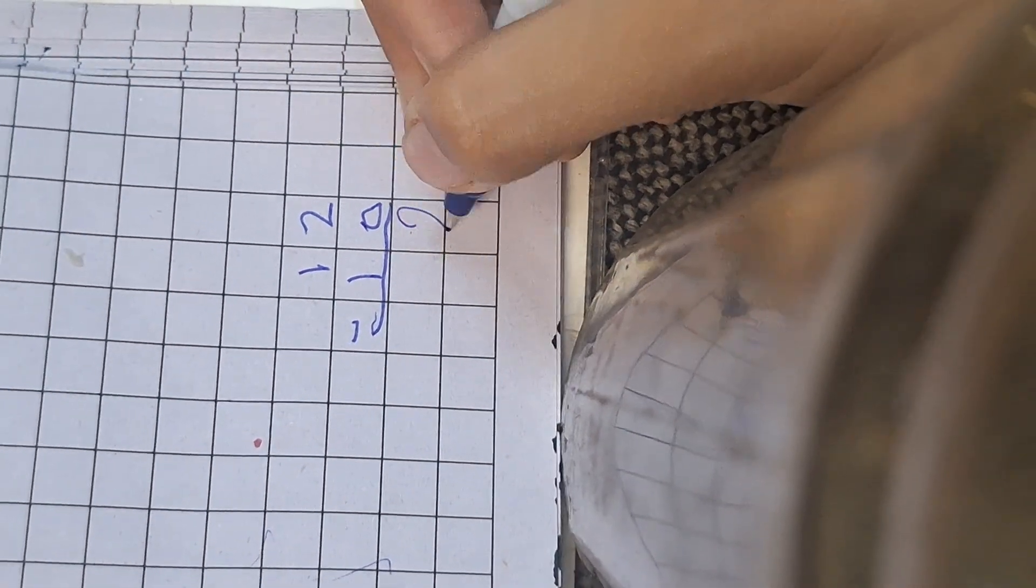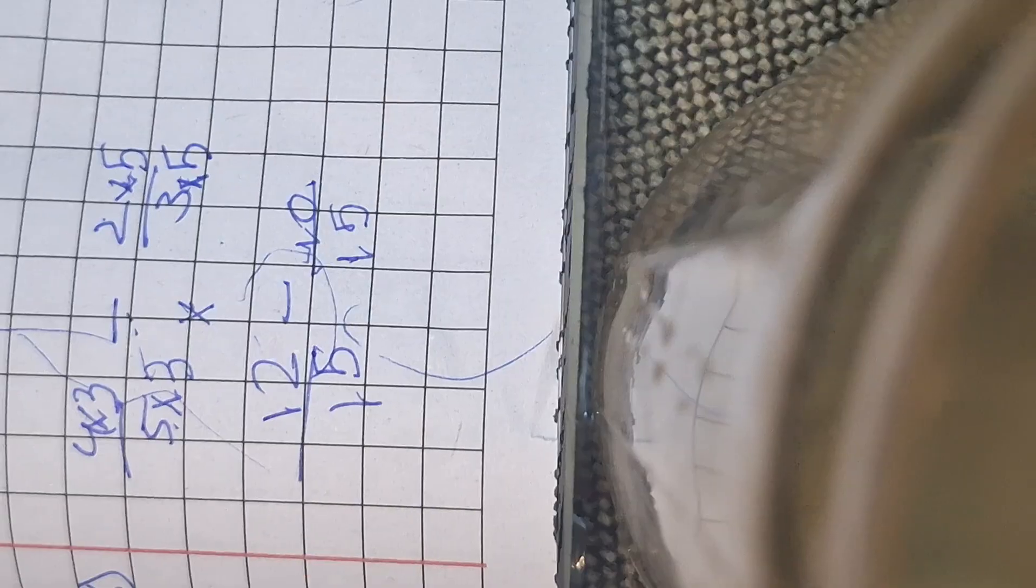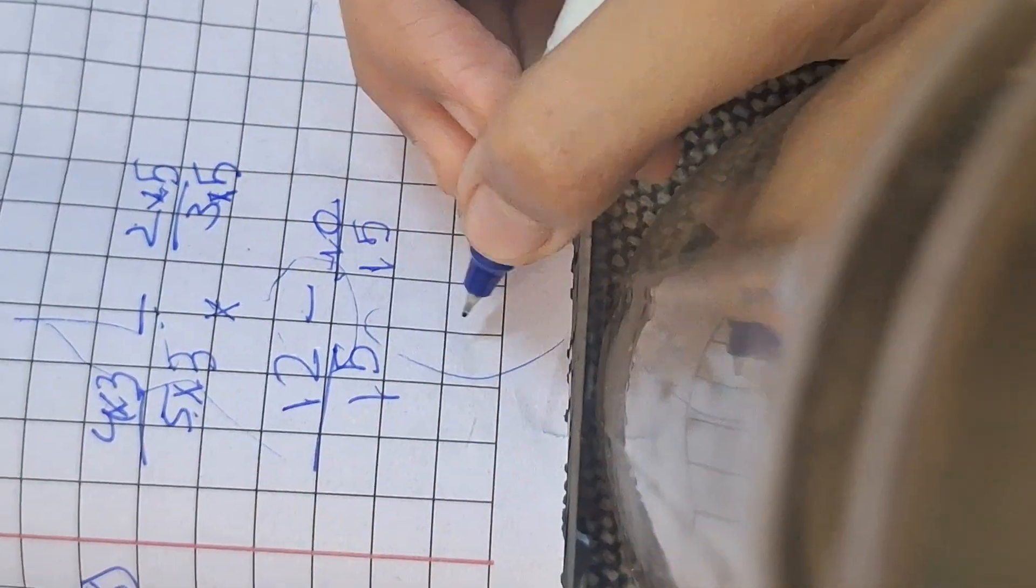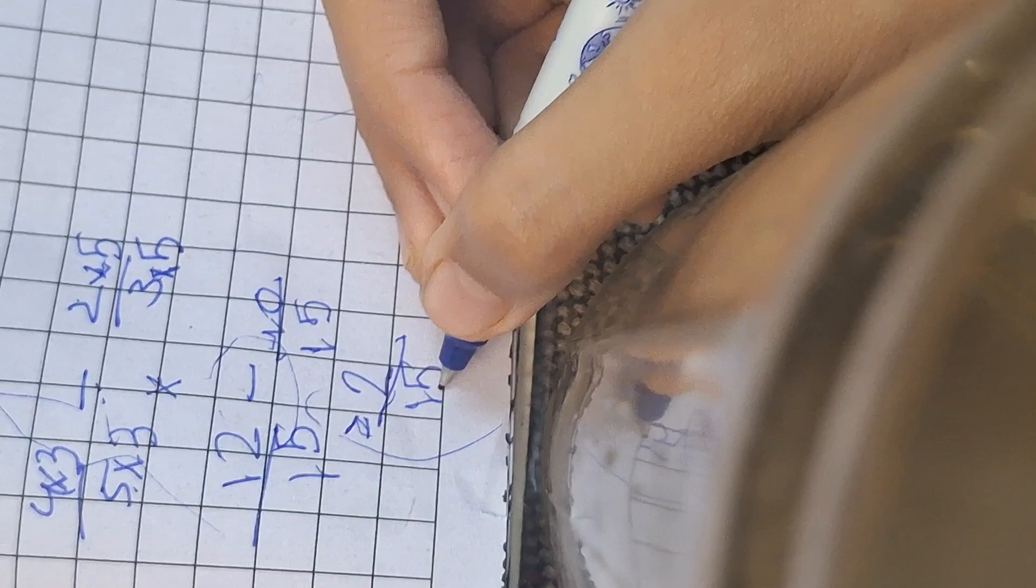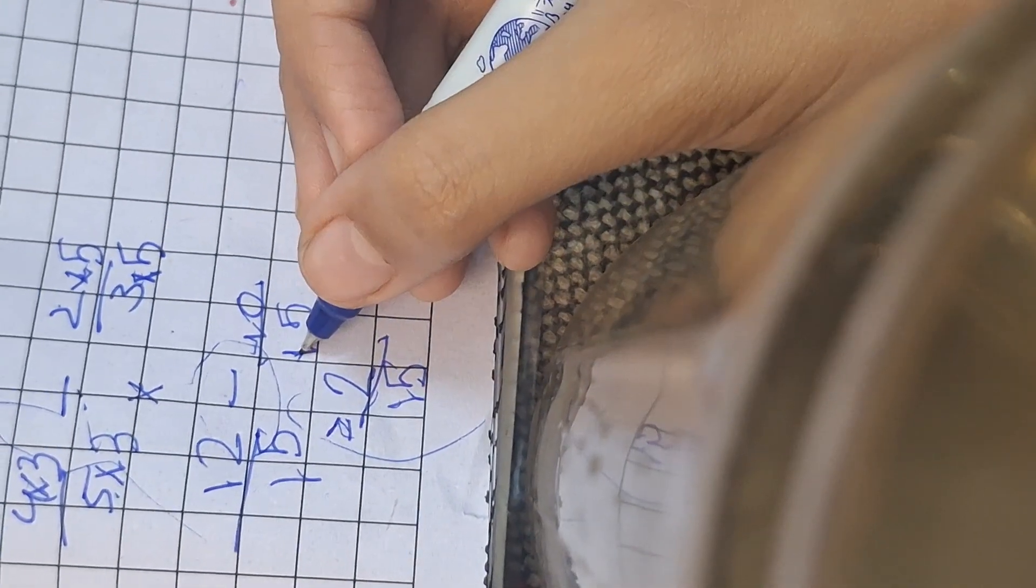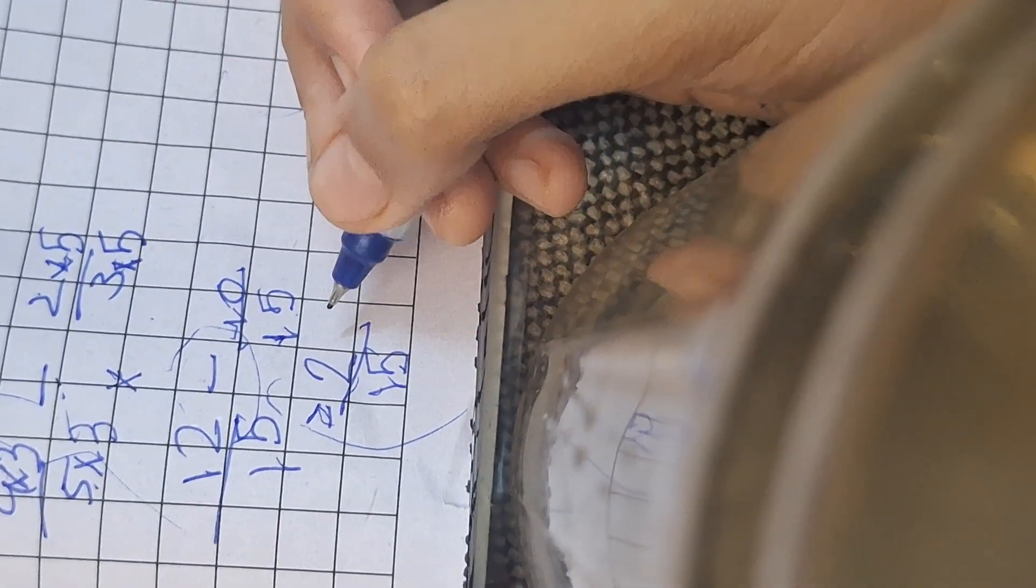12 minus 10 is 2, so our answer is 2. So we're just gonna do equals 2 upon 15. Here's another rule: the denominators stay the same. If your denominators aren't the same, then there's another technique.